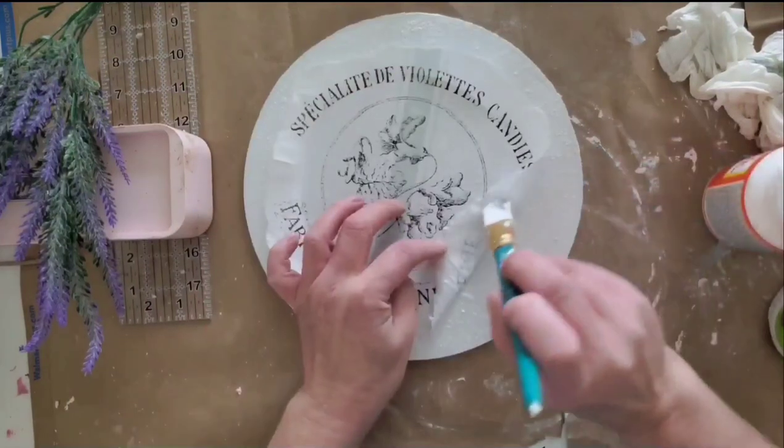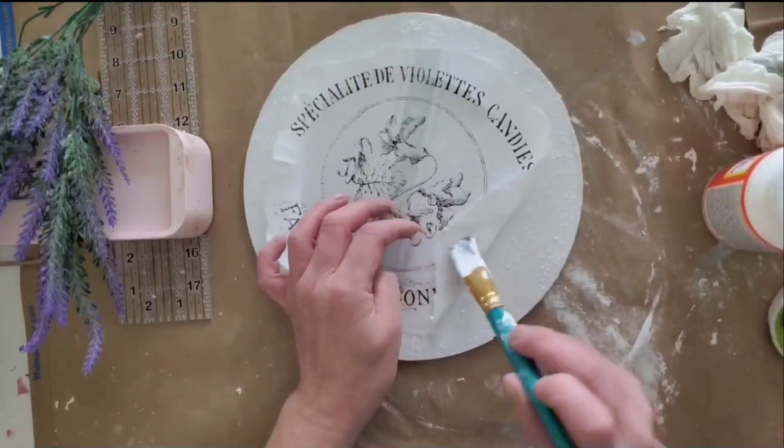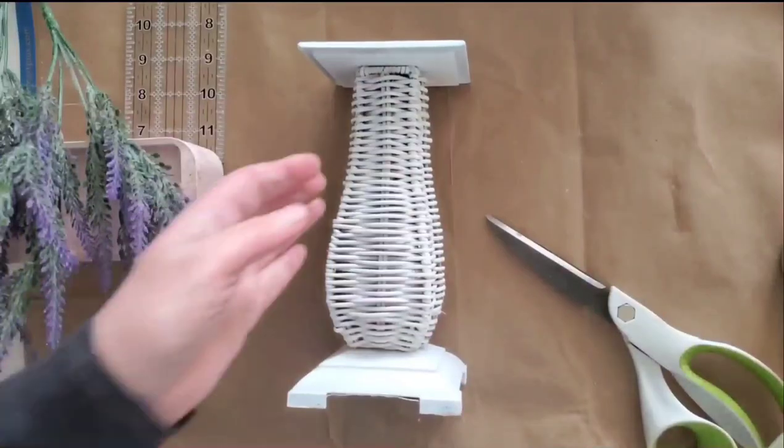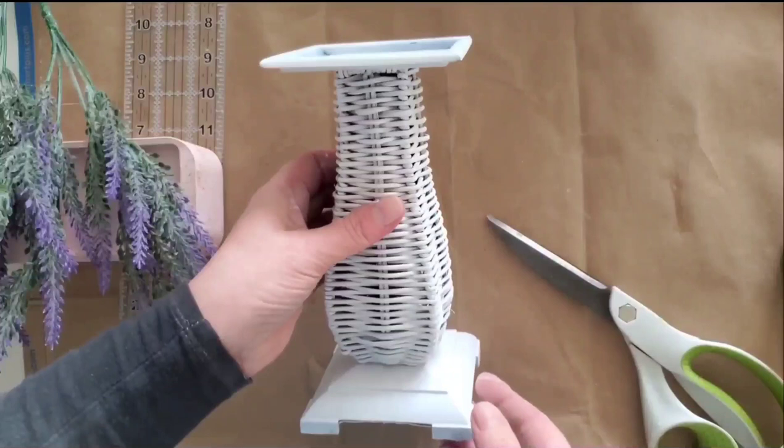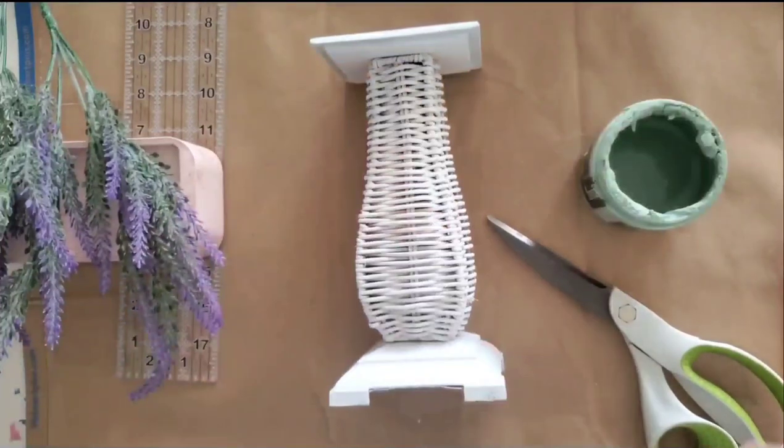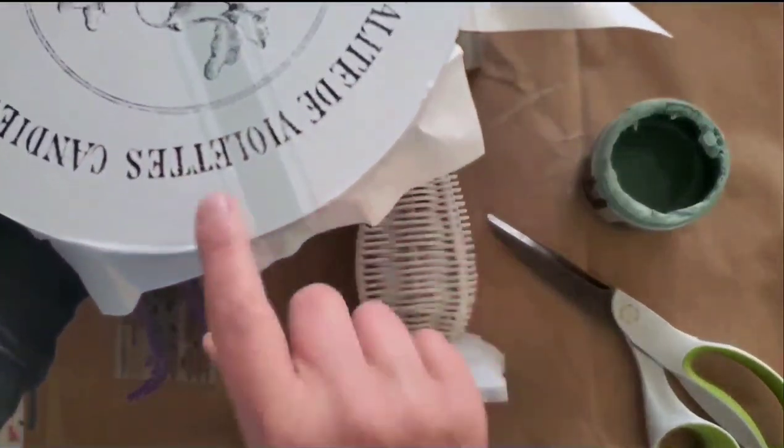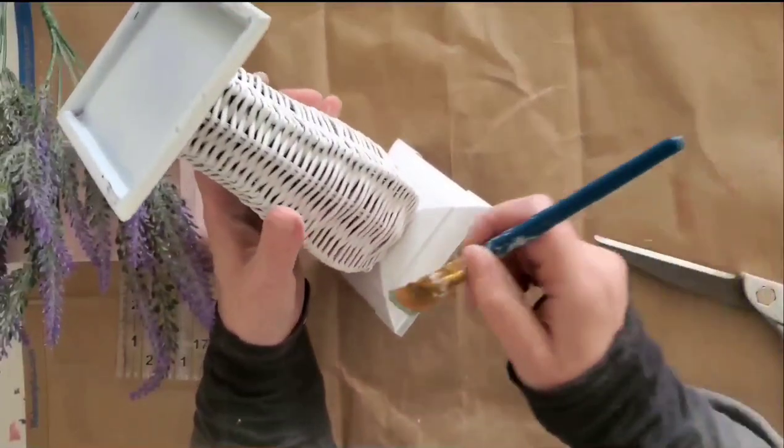Applying some Mod Podge right to the center. The black and white advertisement came from the Graphics Fairy, and I saved it over on Canva and added the grain sack stripe. I printed it on rice paper with my inkjet printer. I love the way that this came out, but I want to match that grain sack stripe, so I'm going to add some Apothecary from DIY Paint Company.